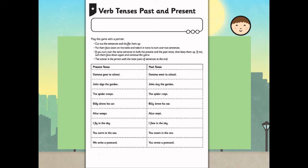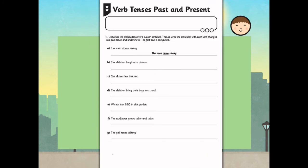You can now complete verb tenses — past and present — on the supplied worksheet. We will play this game with a partner. Cut out the sentences and shuffle them up. Put them face down on the table and take it in turns to turn over two sentences. If you turn over the same sentence in both the present and past tense, then keep them. If not, turn them face down again and continue the game. The winner is the person with the most pairs of sentences at the end. This activity will have you underline the present tense verb in each sentence, then rewrite the sentences with each verb changed into the past tense and underline. The first one is completed for you.